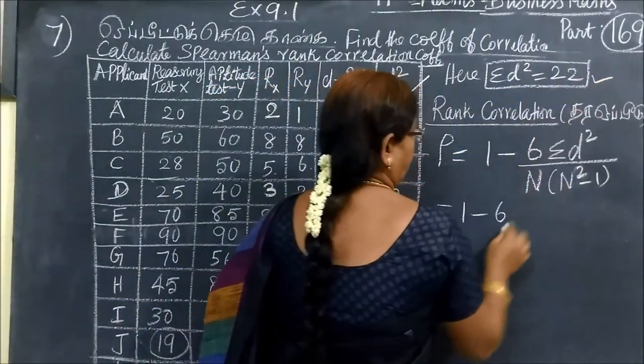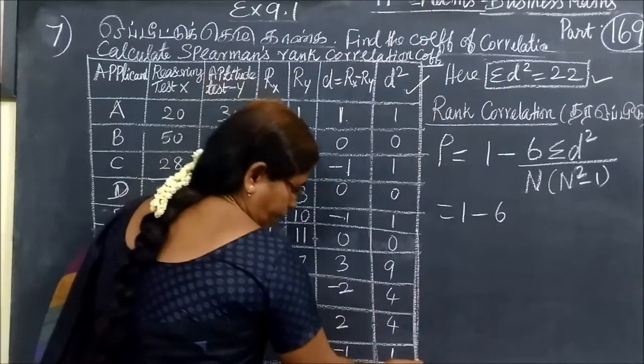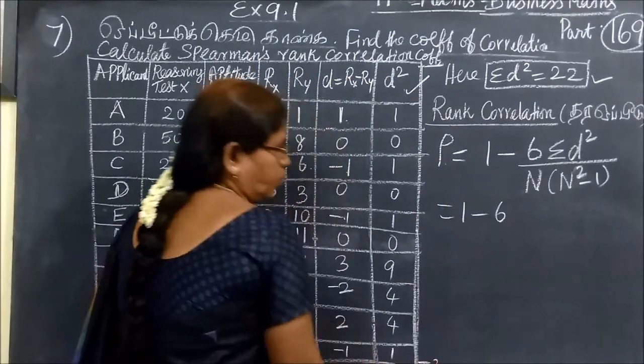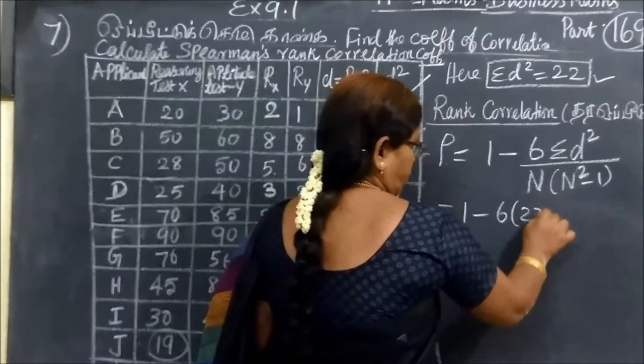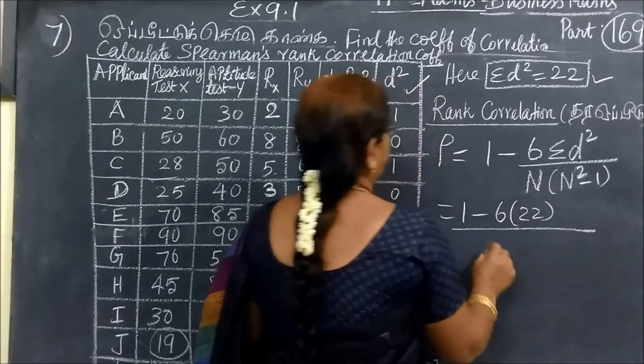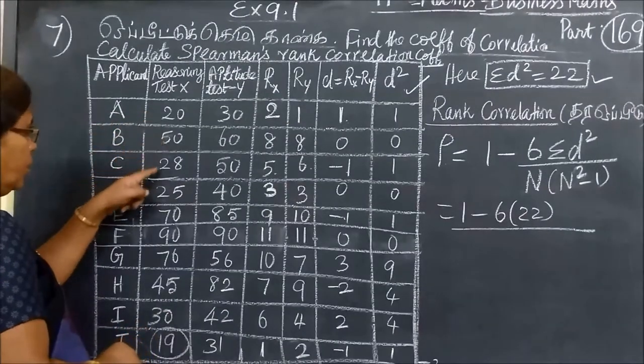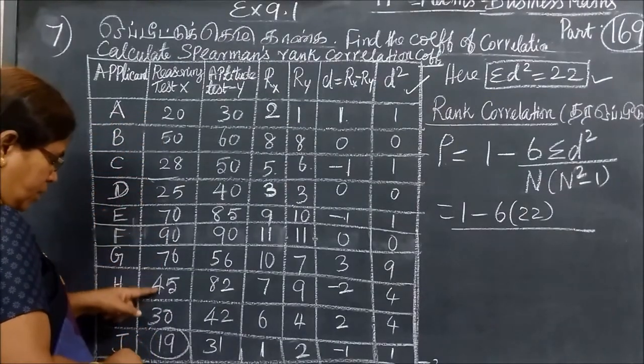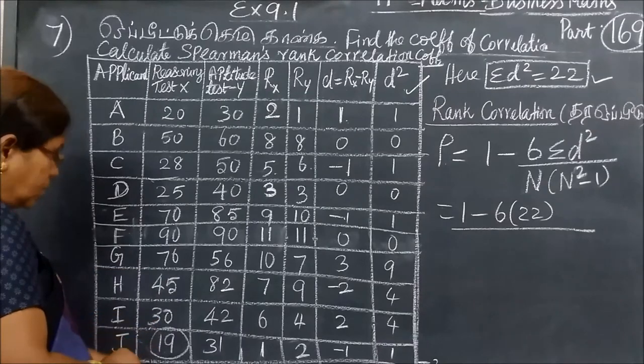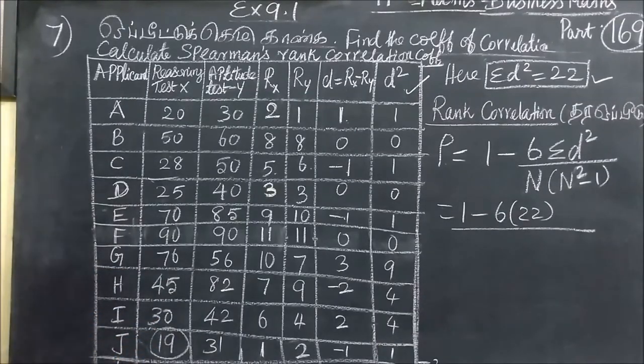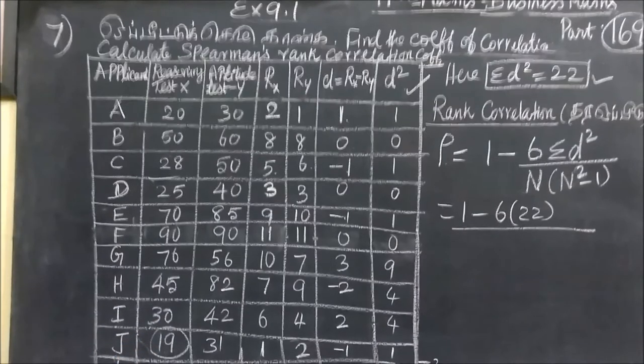So rho. Sum of d squared is 22. So here you write 22. And the number of terms is here. Here number of terms is 1, 2, 3, 4, 5, 6, 7, 8, 9, 10, 11. Here you are given 11. So 11.